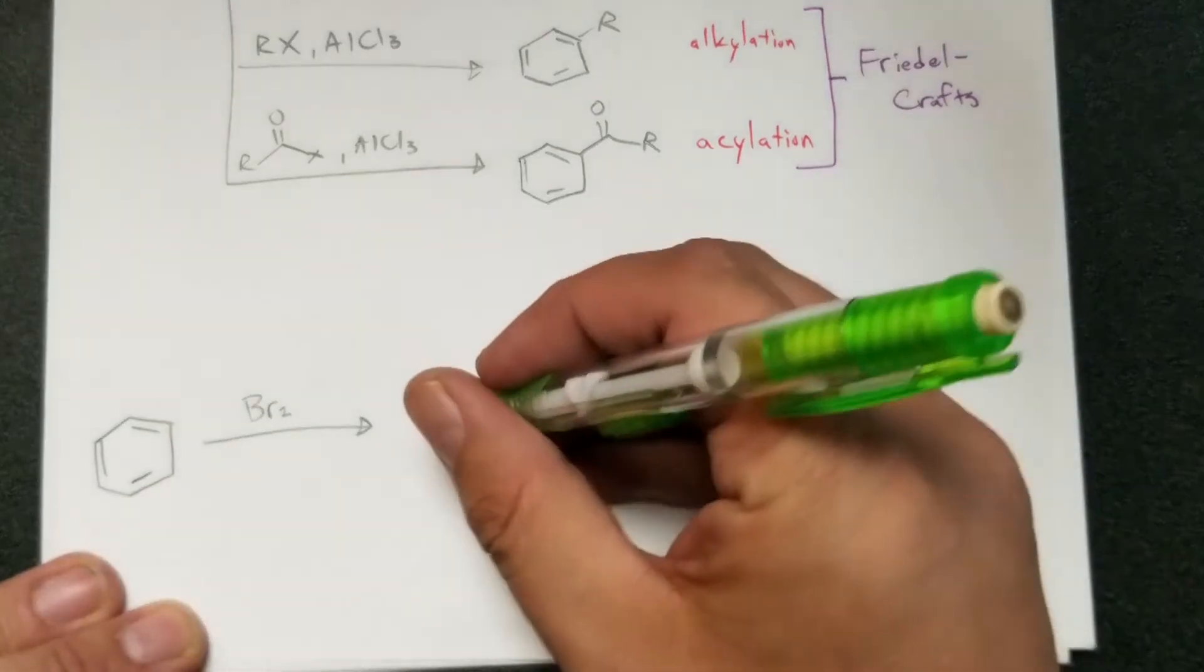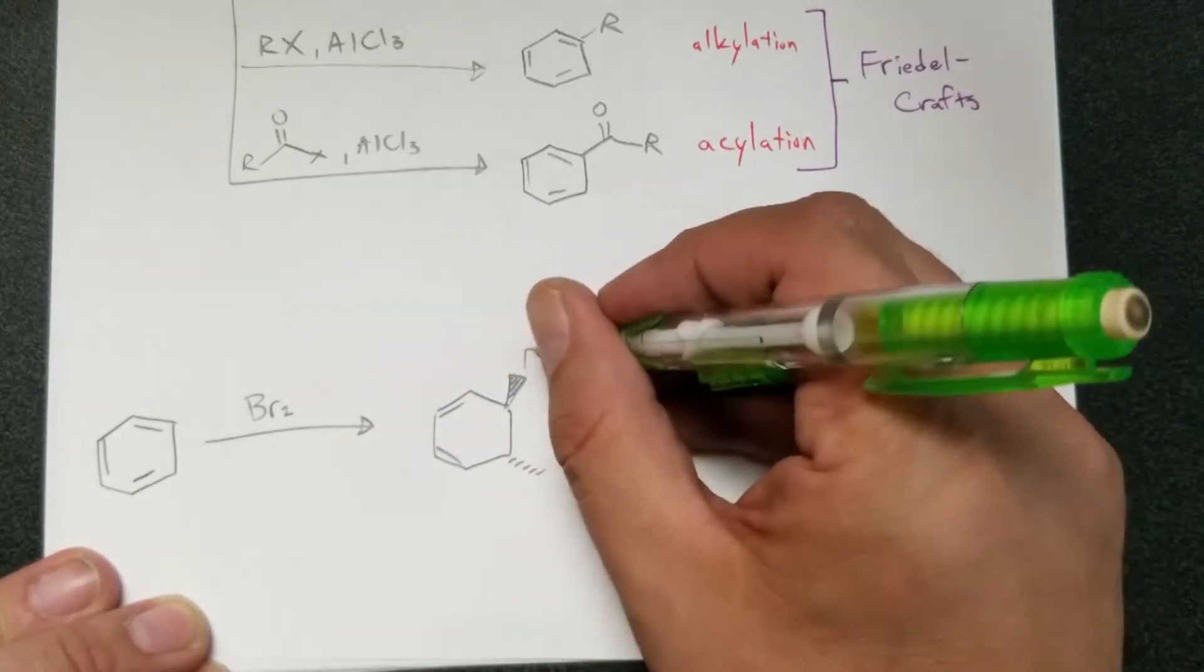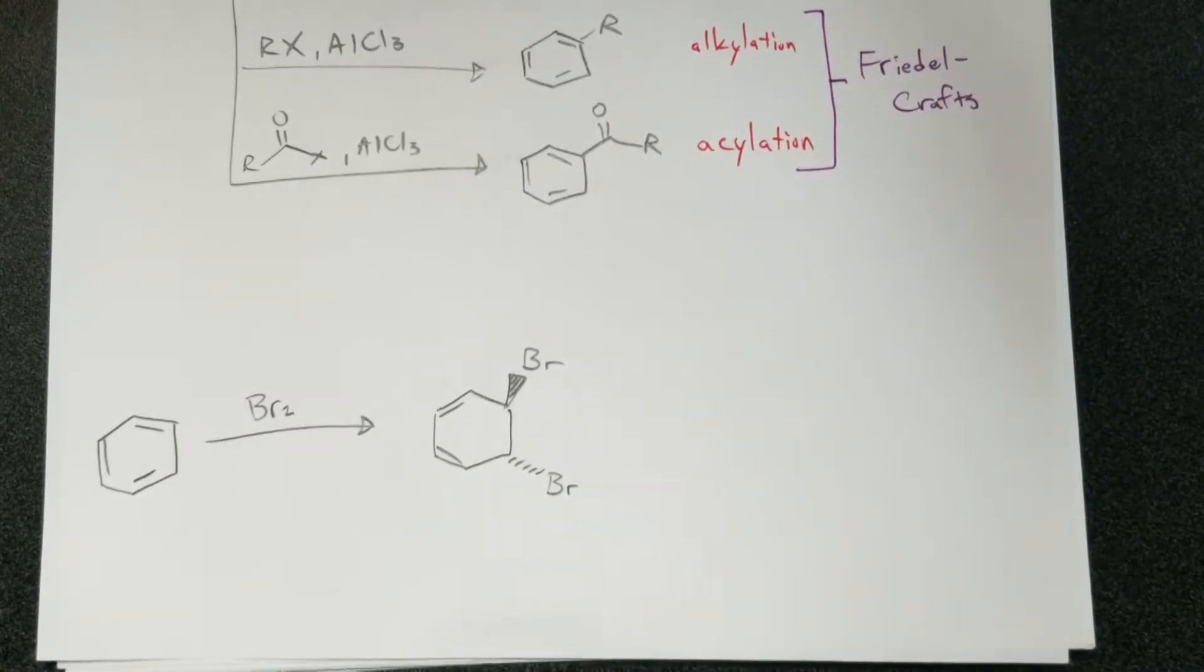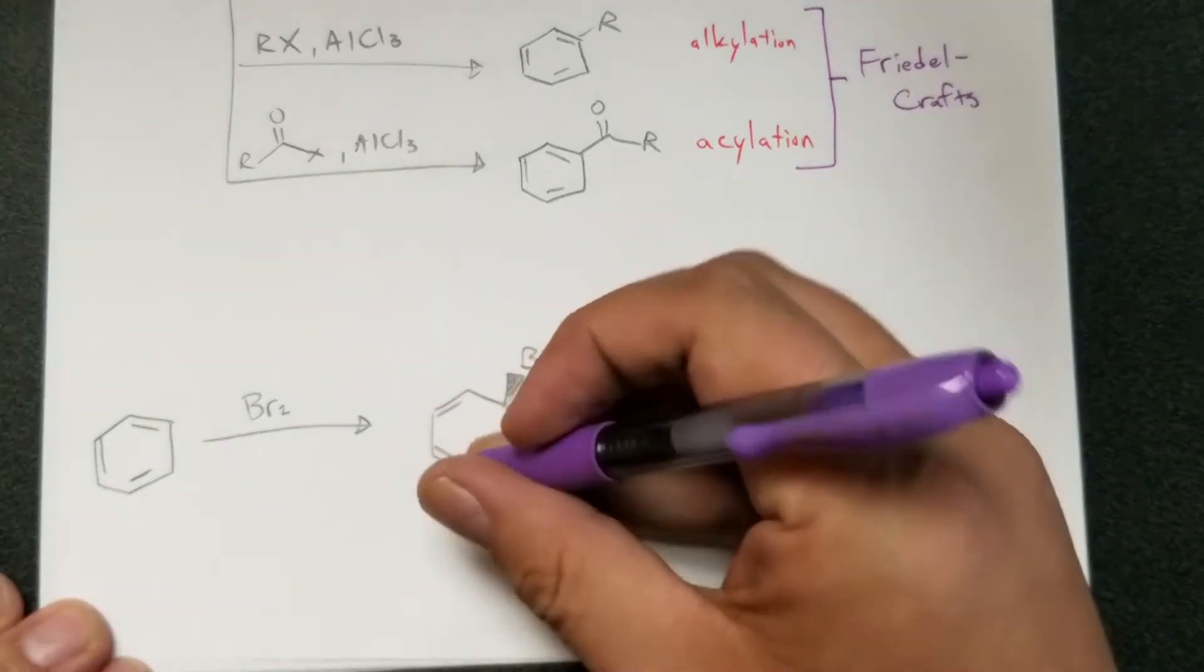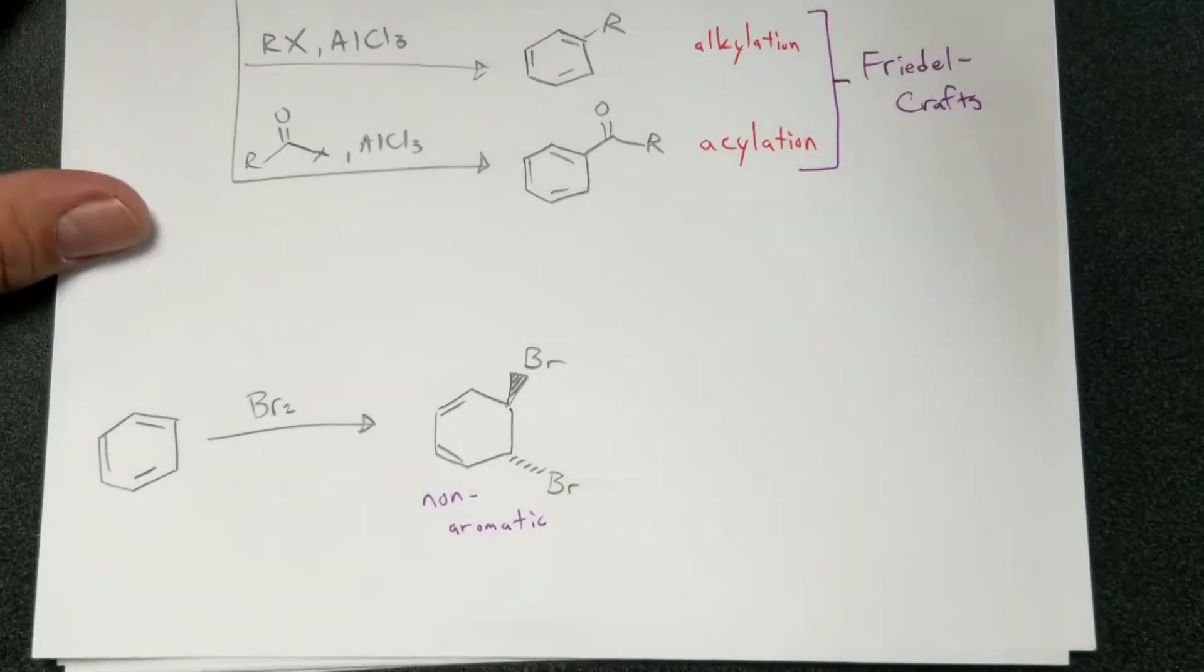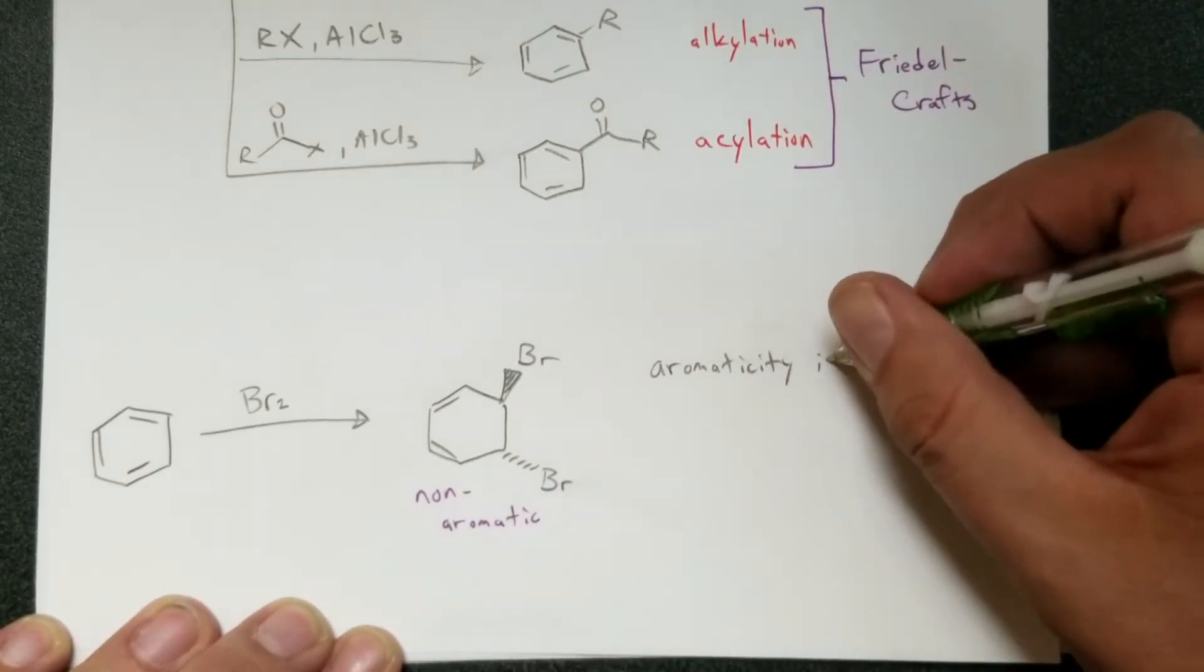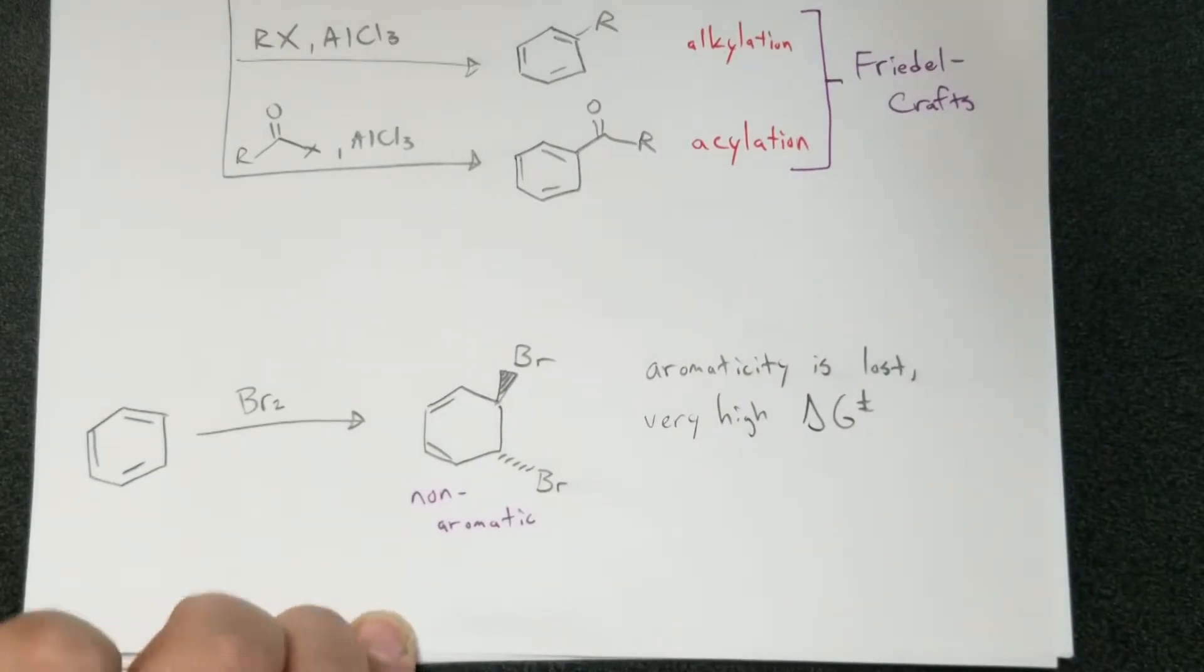So I want to go ahead and draw this product. And this is an anti-addition, so we're going to get that. So looking at the product there, is that product aromatic, non-aromatic, or anti-aromatic? It's non-aromatic. These carbons now are sp3 hybridized, so this is non-aromatic. We don't have the full 360 of pi bonds now. Because of the fact that it's non-aromatic, that makes the delta G for this reaction, or the activation energy in particular, is very, very large. So to summarize here, the aromaticity is lost. This reaction has a very high delta G double dagger, that was activation energy. So these reactions are not favored.